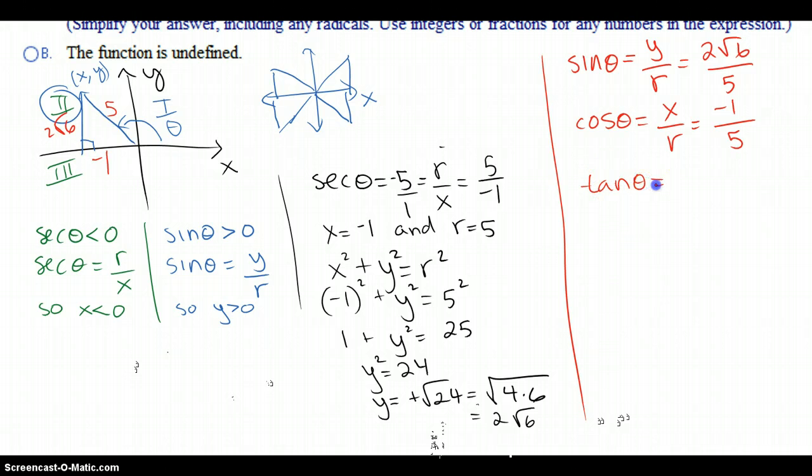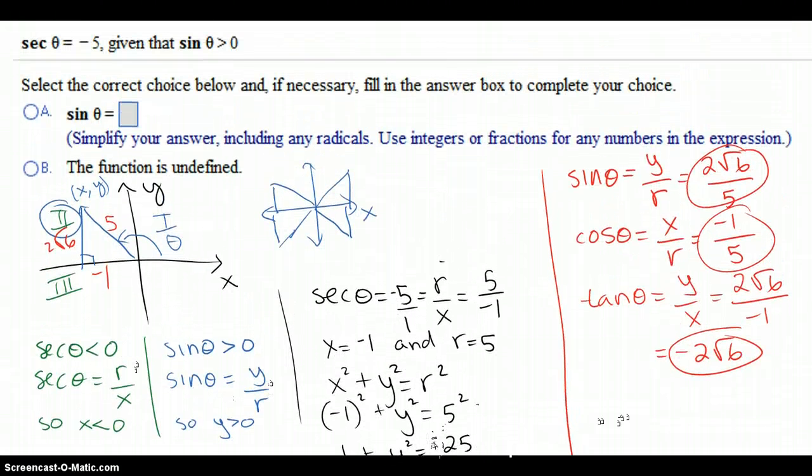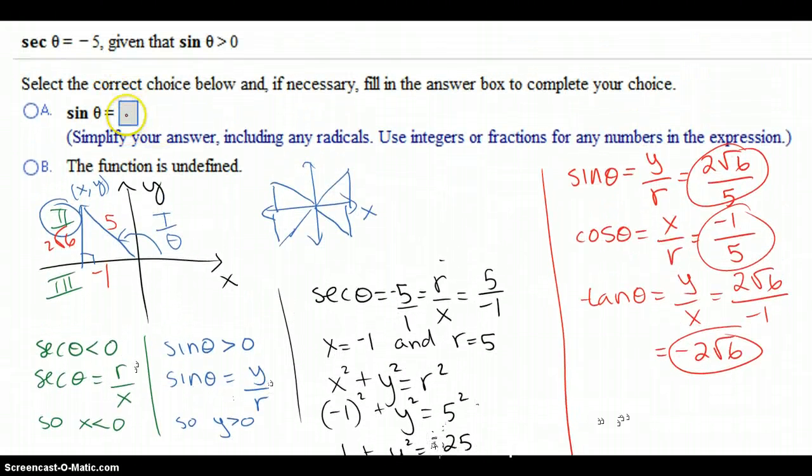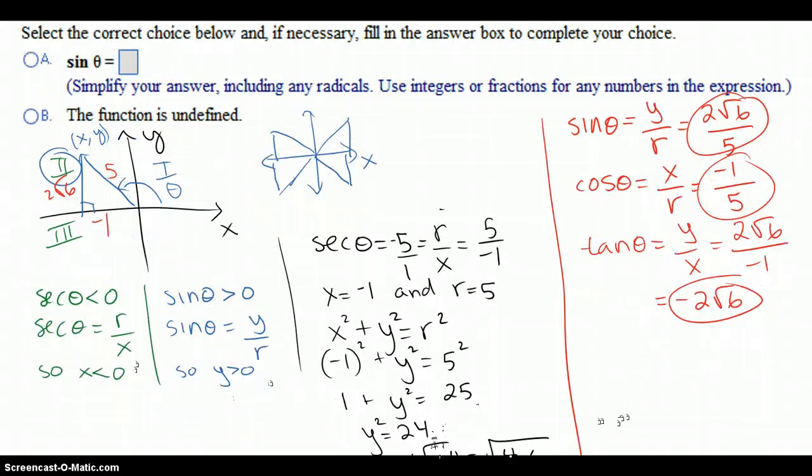Tangent of theta is y over x, which is the y, 2 square root of 6, over negative 1. Now, they're probably not going to write it that way. They're going to, the answer is going to expect you to put the negative up in the numerator. So far, those are the answers that you need to type in. You type in this and you press enter, they'll ask for cosine, and you type that in, and so forth.